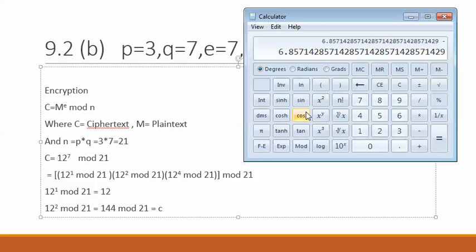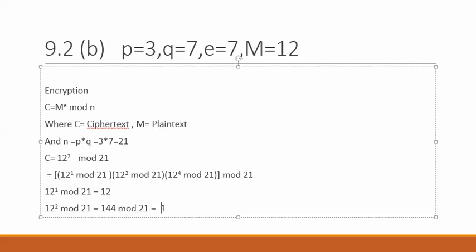We type 144 then divide by 21, which gives us 6.85. Then we subtract 6, which gives 0.85, then multiply by 21, so we are left with 18. So 18 is the value.